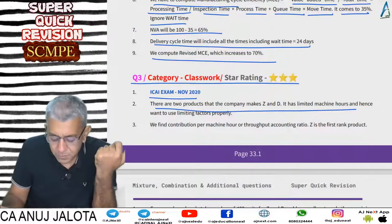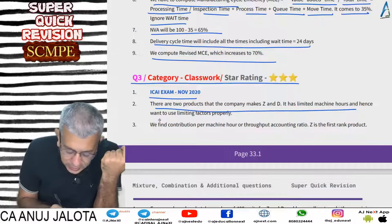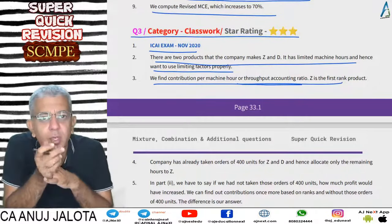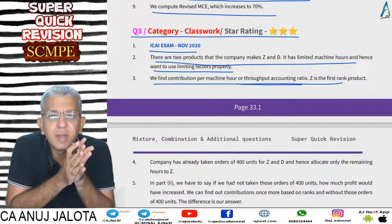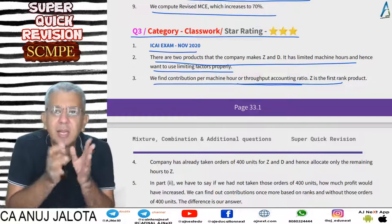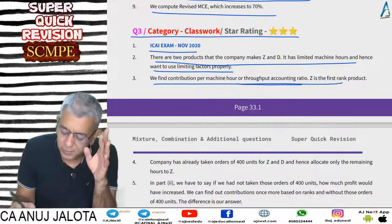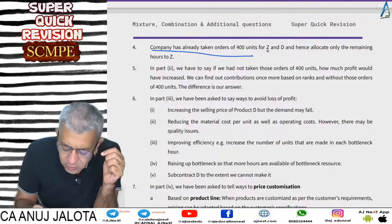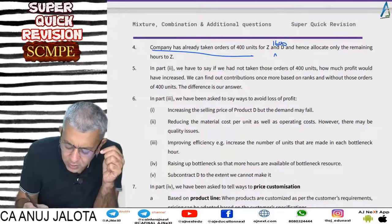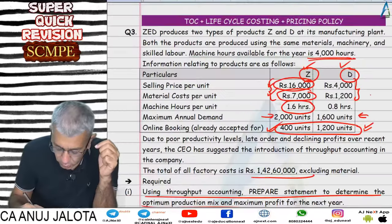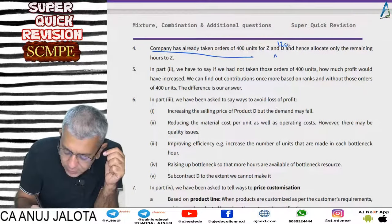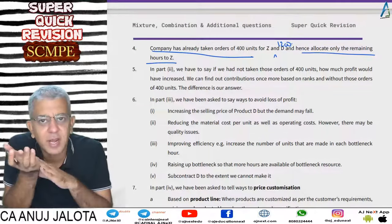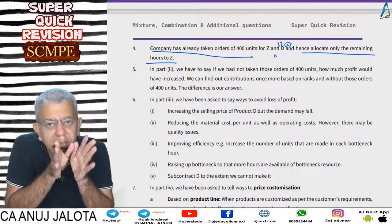The throughput accounting ratio is contribution per machine hour divided by factory cost per machine hour. Ranks come out the same under both approaches — Z is the first-rank product. The company has already taken orders for 400 units of Z and 1,200 units of D. After fulfilling pre-accepted orders, allocate remaining machine hours to Z based on first rank.